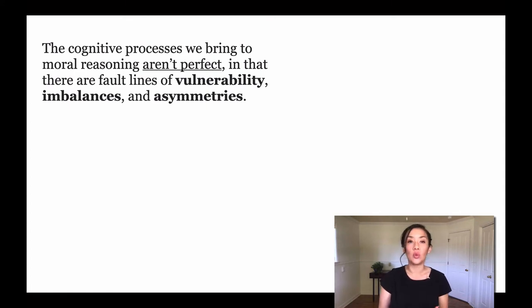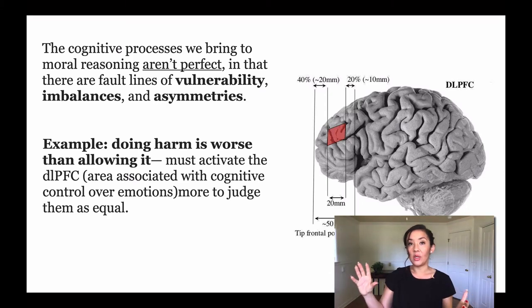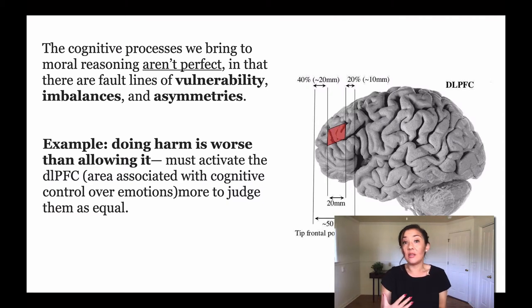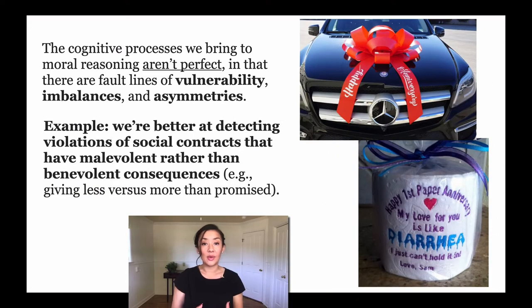Cognitive processes that we bring to moral reasoning aren't perfect — there are fault lines of vulnerability, imbalances, and asymmetries. One example suggests that we think doing harm is worse than allowing someone else to do harm. Research suggests that if you're asked to imagine that doing harm is the same as allowing someone to do harm, it actually activates the part of the brain associated with emotional control. If someone commits murder, we feel that is worse than someone allowing another individual to commit murder, even though the same person dies. That's a strong example of how the outcome is the same but the context changes how we think about it.